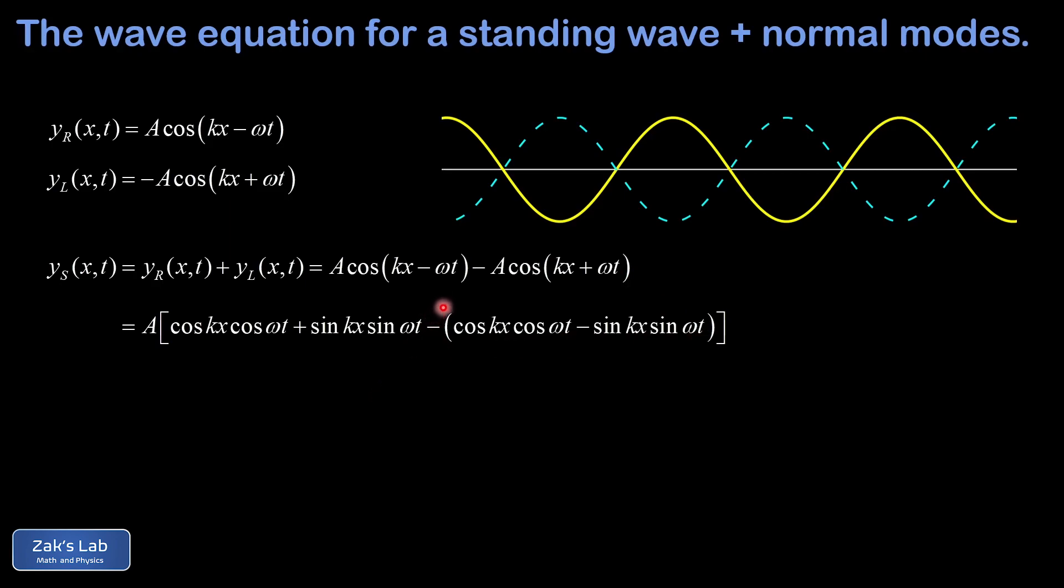We notice when we distribute the minus sign into the second term that the cosine terms are going to cancel each other out. When we distribute that minus sign, the sine terms in that second piece become positive. So we end up with 2 sin(kx) sin(ωt), and we can move that 2 out in front to obtain the wave function for the standing wave ys(x,t) = 2A sin(kx) sin(ωt).